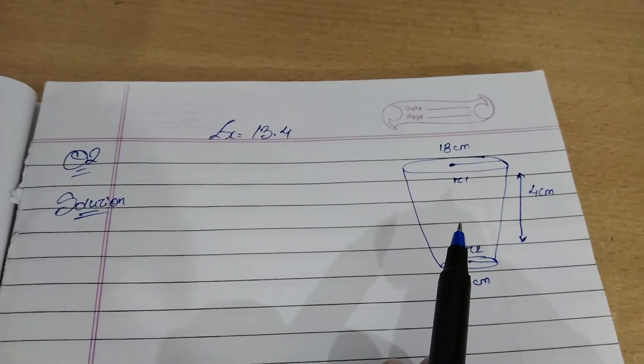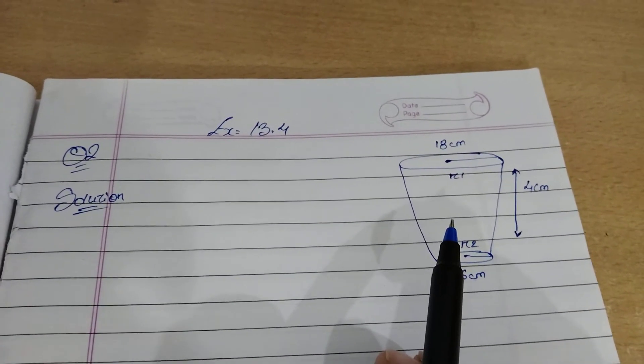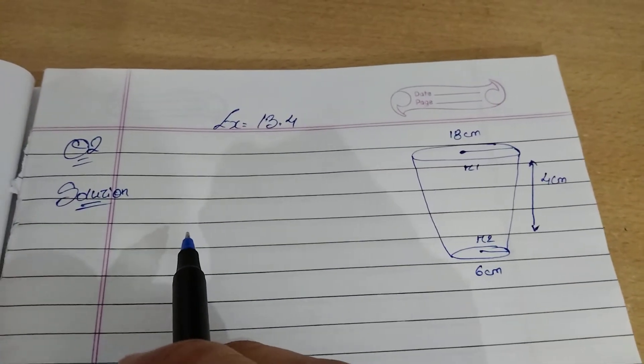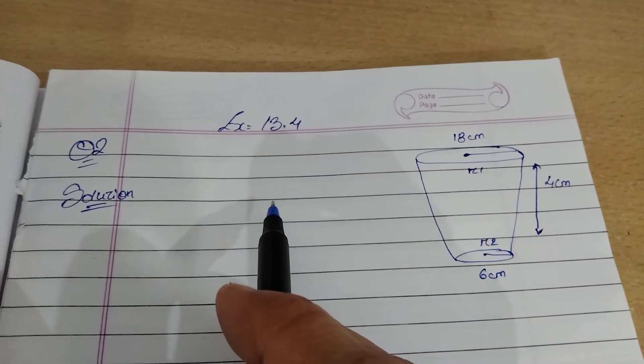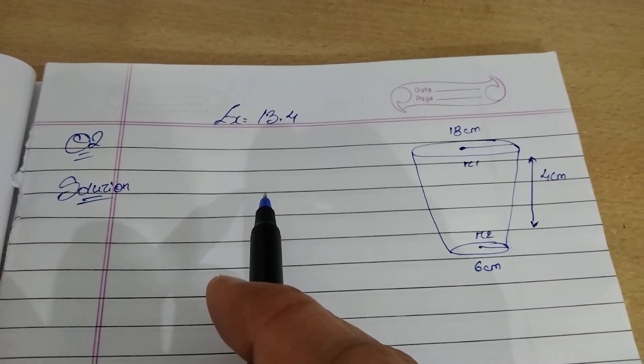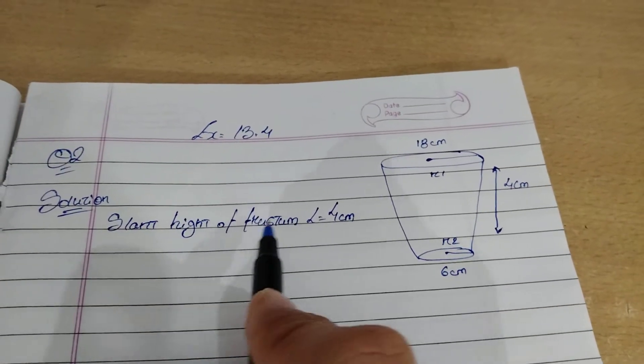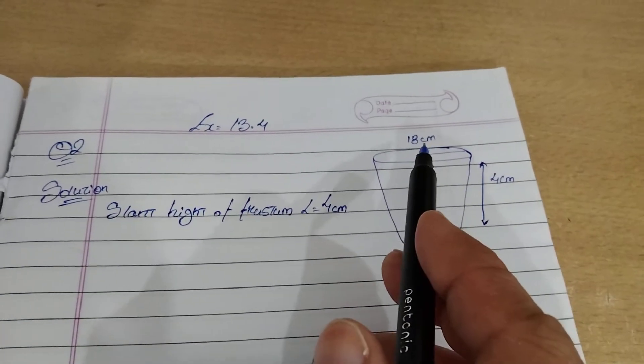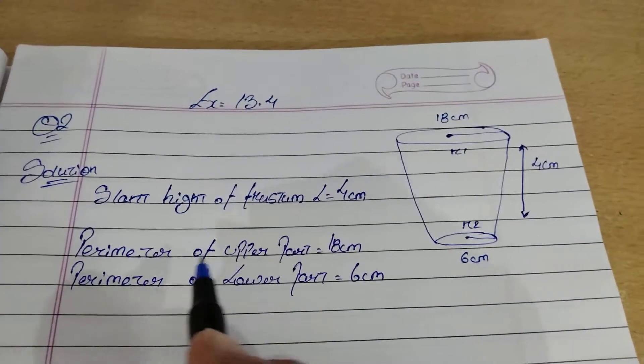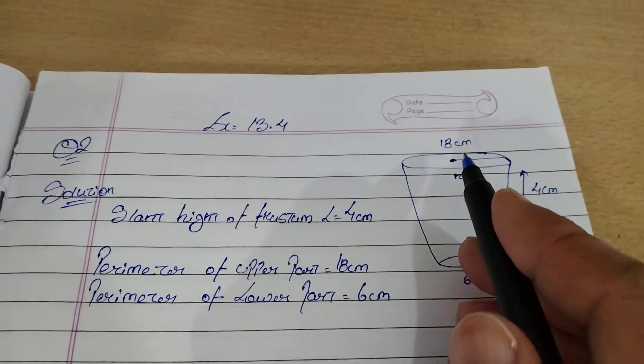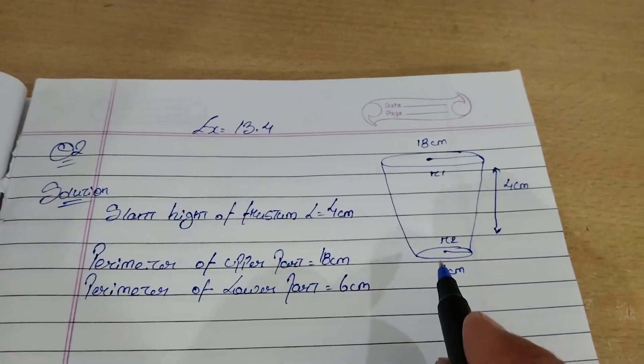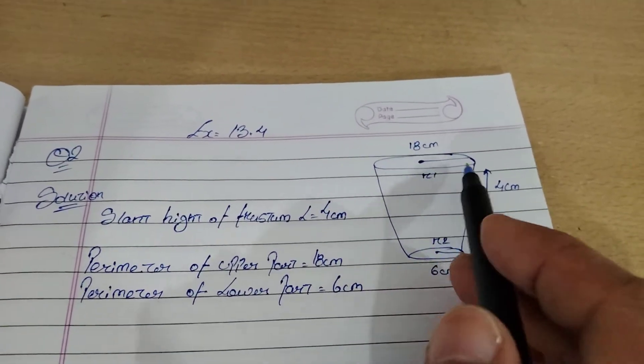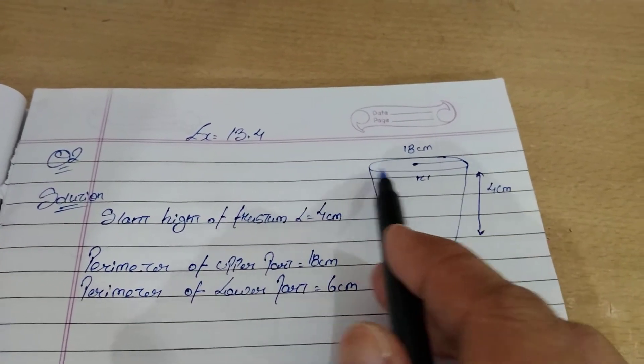Let me first write the slant height which is given in the question, that is 4 cm. Let's write the perimeter which is given in the question, that is 18 cm. The perimeter of upper is 18 and the lower is 6. As we know that in this frustum, the bigger number will always be on the top because the bigger area is bigger.